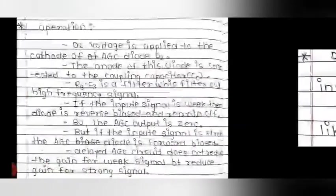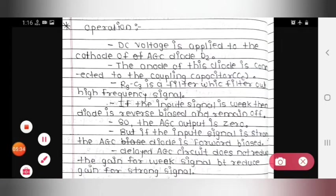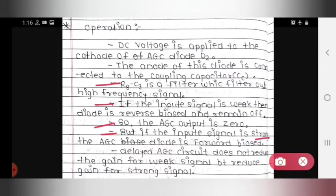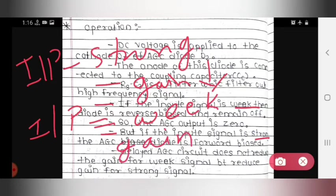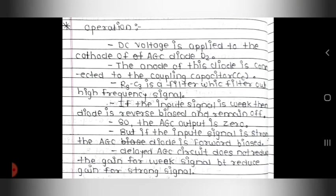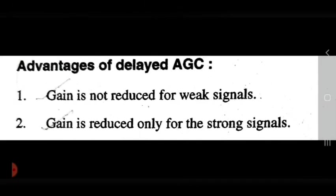In this way, these are the important points: R3C3 filtering, and input signal behavior — if the input signal is strong, gain is reduced; if the input signal is weak, gain is not reduced.